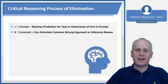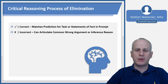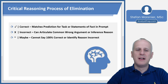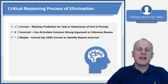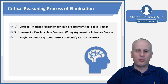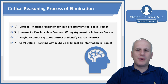An X means that it's incorrect and you can articulate specifically a common wrong argument or inference reason. We're going to see some really redundant ways that the exam makes critical reasoning answer choices incorrect, and you want to identify and articulate what specifically makes a wrong answer wrong. We also have some ambiguity within the process of elimination — sometimes you find yourself going 'kind of, maybe,' and in that case use the tilde or squiggle, indicating you cannot say 100% that it matches your prediction or that you can produce a definitive reason it's incorrect.